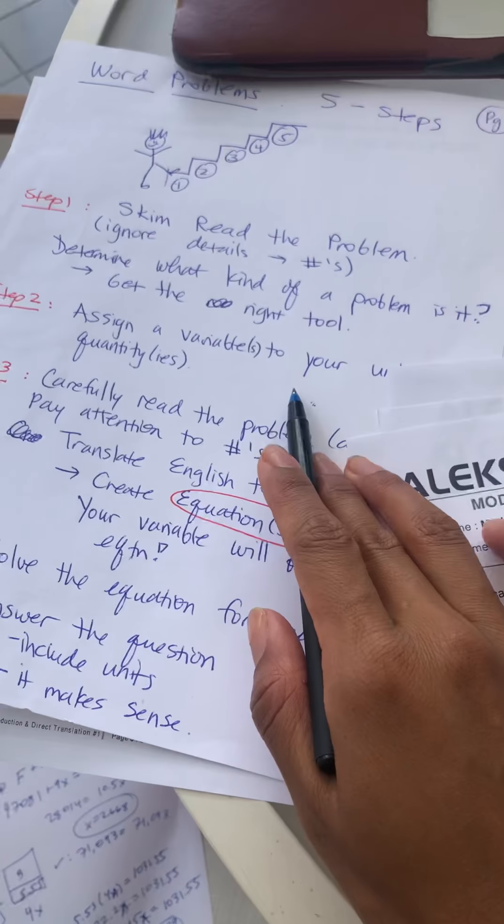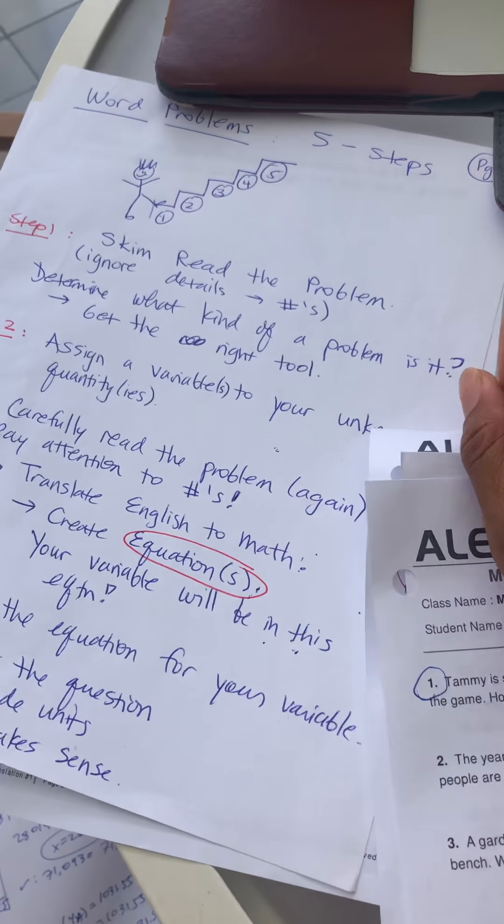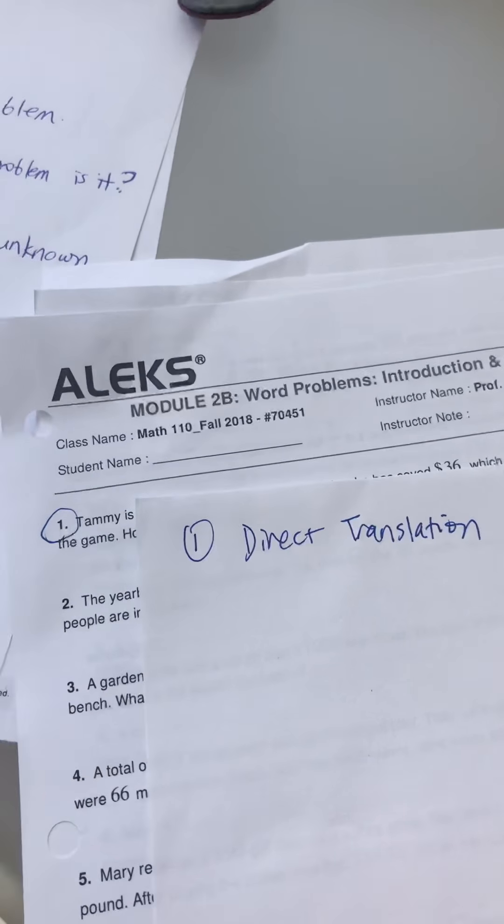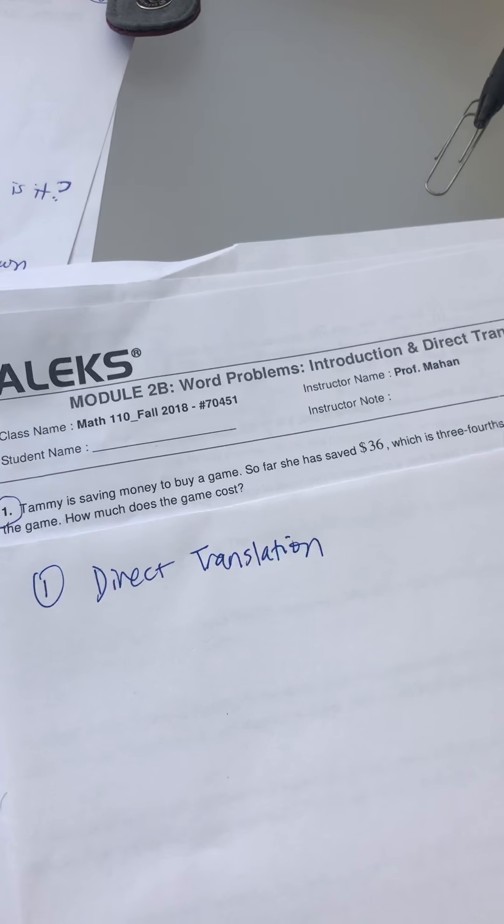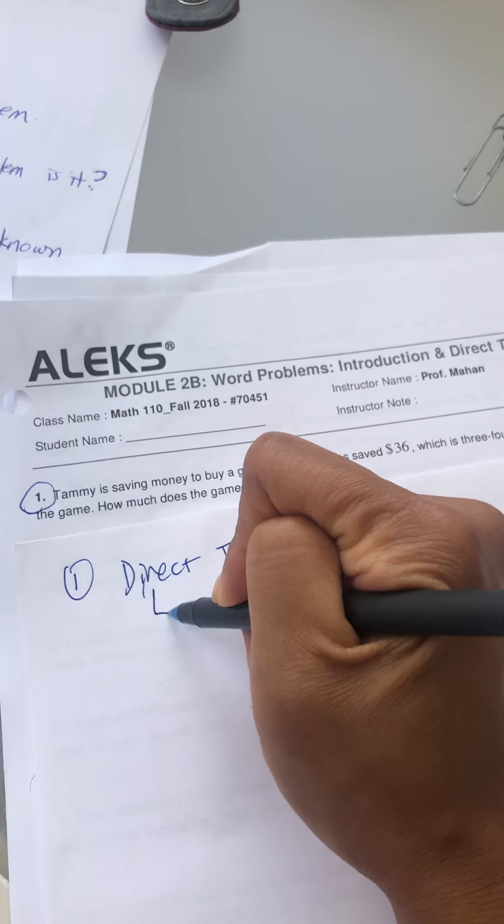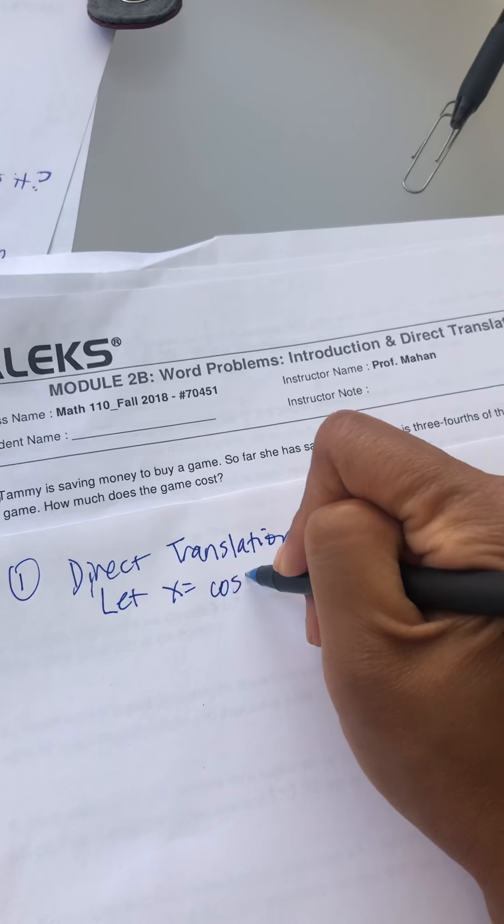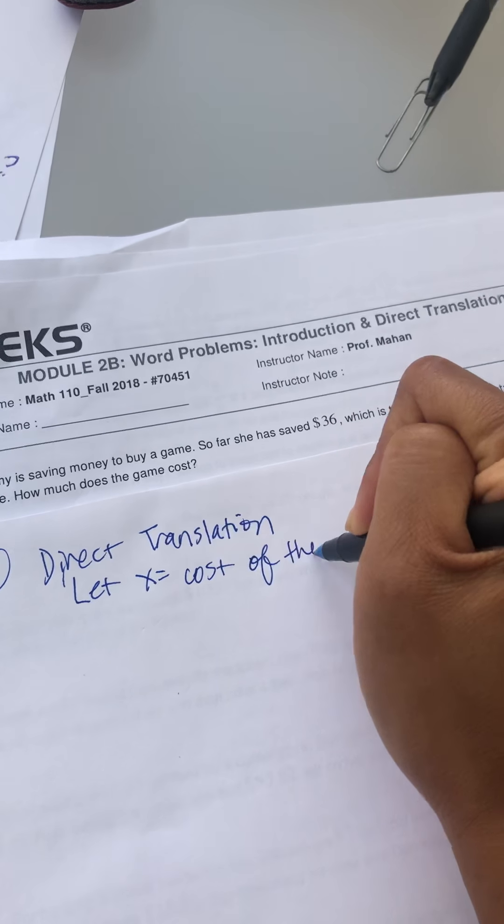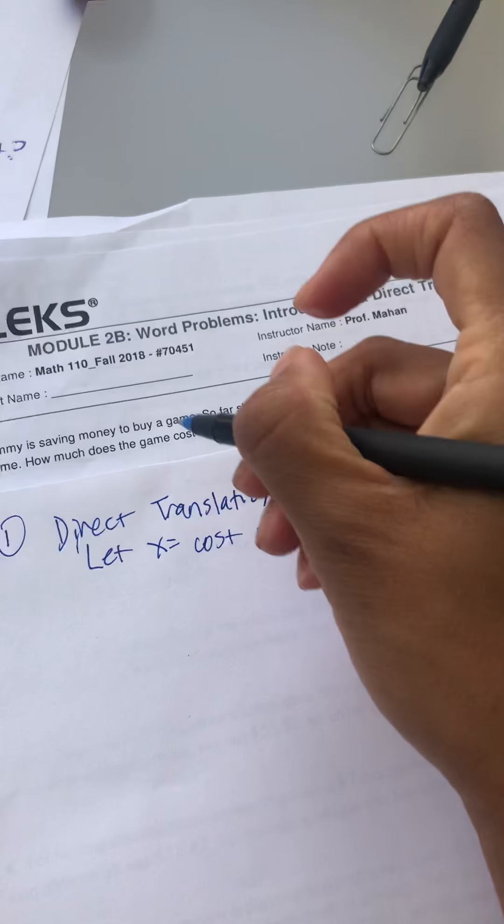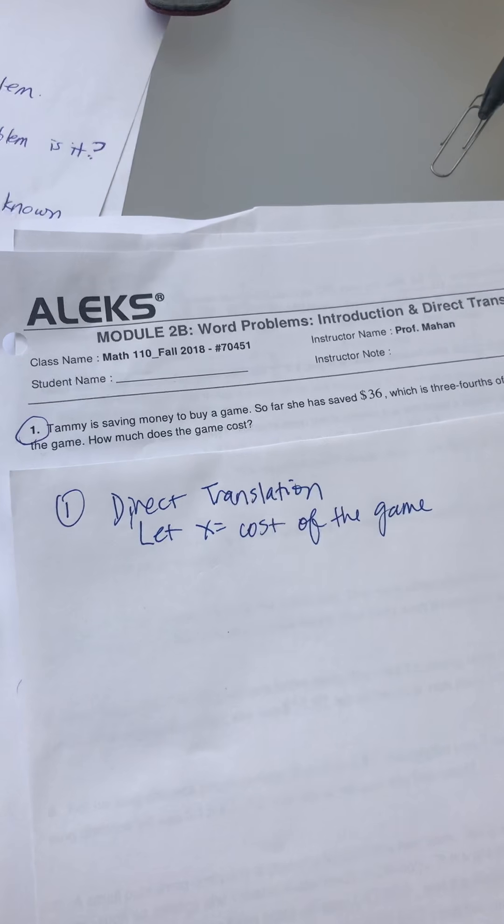Step two: assign a variable to your unknown quantity. So what do we not know here? How much does the game cost? So I'm gonna say let x equal the cost of the game. You need to know what your variable is in order to plug it into this equation.